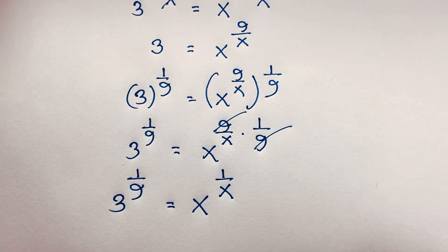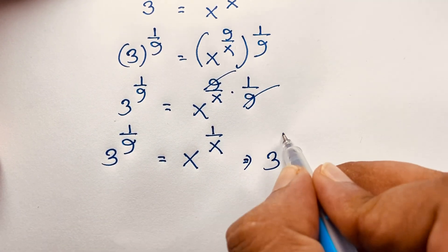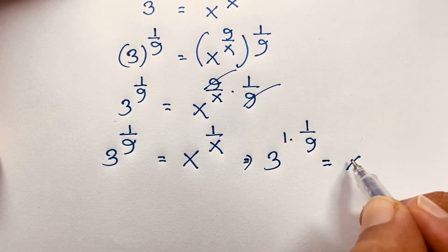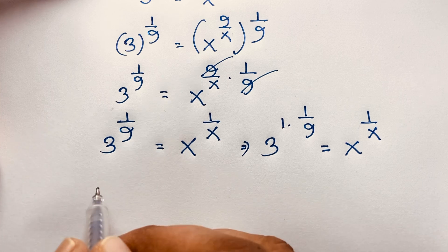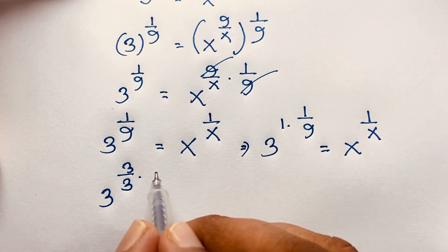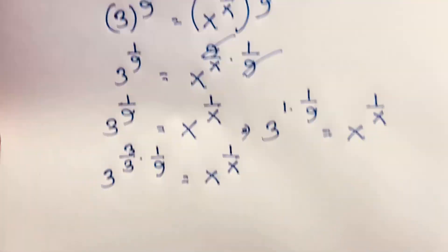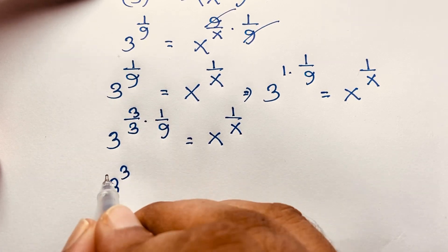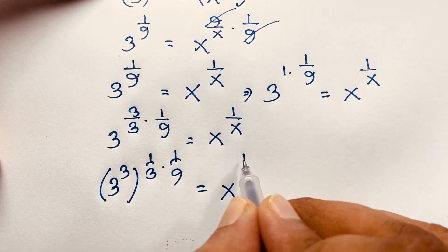Now, to simplify for x, observe that 3 to the power 1 over 9 can be rewritten as 3 to the power 3 over 27, since 3 divided by 3 gives 1. So 3 to the power 3 over 27 equals x to the power 1 over x. Taking the 3 to the power 3 together gives 27, so we have 27 to the power 1 over 27 is equal to x to the power 1 over x.